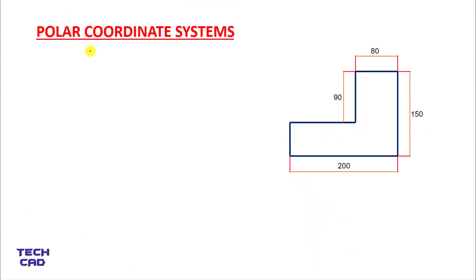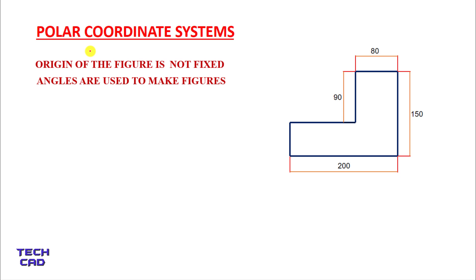Hello everyone. In this video we are going to understand what is the meaning of polar coordinate systems. In polar coordinate system, the origin of the figure is never fixed. Wherever you go, that point becomes the origin, and in polar coordinate system we are using angles instead of coordinates of the particular points to make the figure.